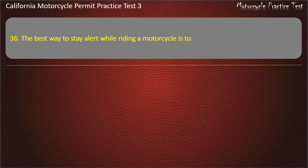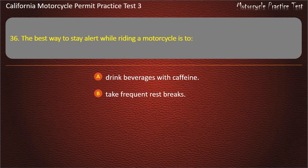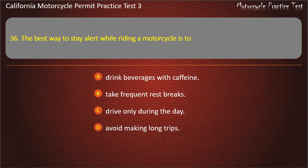Question 36. The best way to stay alert while riding a motorcycle is to: drink beverages with caffeine, take frequent rest breaks, drive only during the day, or avoid making long trips. Answer: Take frequent rest breaks.